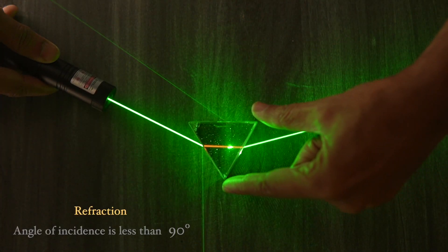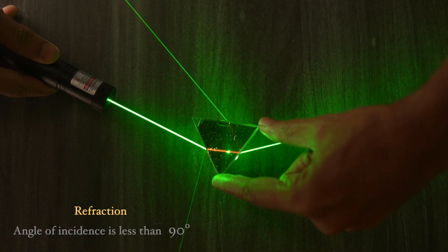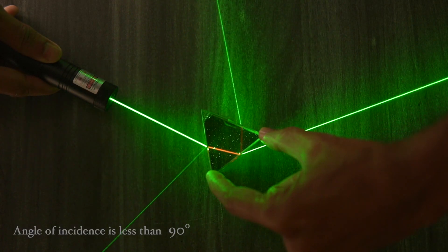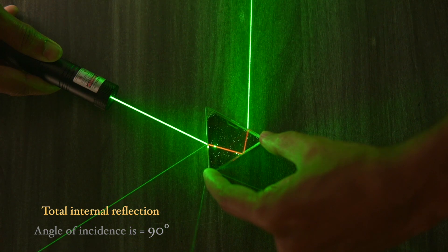Here initially the angle of incidence is less than 90 degrees and that is the reason why the emergent ray is bent towards its base.